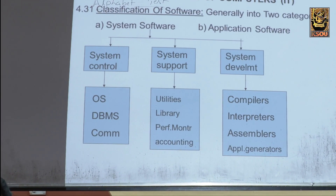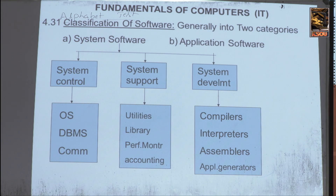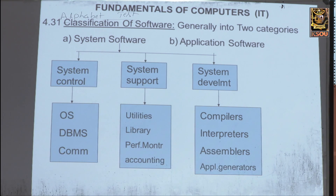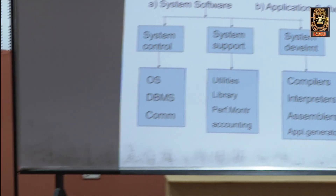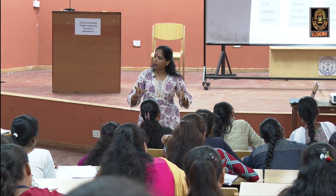When you switch on the computer, the system software is already built in. In system software, you have system controls, system support, and system development. Under system control, you have OS — Operating System — such as Windows Vista, Windows XP, or Windows 95. The OS acts as a coordinator between the user and the computer, communicating between the user and different parts of the computer.